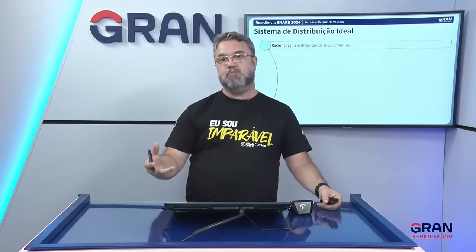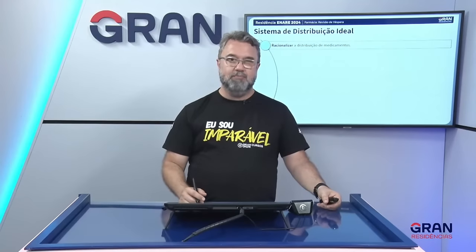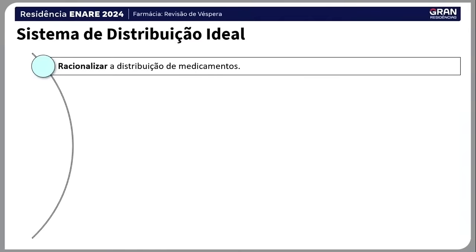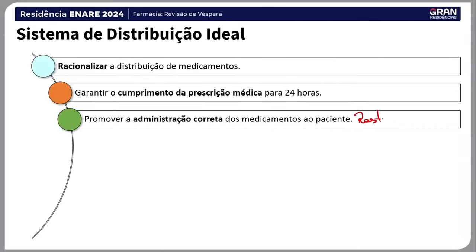O sistema ideal deve racionalizar a distribuição de medicamentos, garantir o cumprimento da prescrição médica durante 24 horas, e promover a administração correta dos medicamentos ao paciente. Um fator de segurança muito importante é a rastreabilidade. Um sistema que gosto muito é aquele onde se trabalha com palm top, leitor de código de barras, e o paciente tem identificação na pulseira com código de barras ou código data matrix.